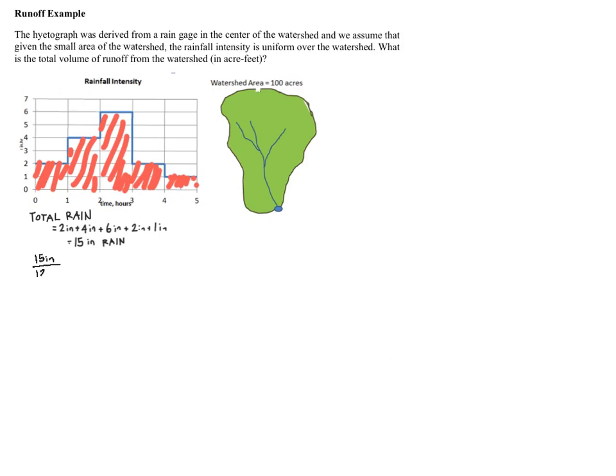I'm going to convert that to feet so I can have acre feet. This is 1.25 feet of rain that fell in the five-hour storm. This is applied over the total watershed area of 100 acres, and we get 125 acre feet of water. So 125 acre feet of flow will pass out of the outlet of the watershed if all of the rain that fell ends up in the watershed, but that's not actually what happens.